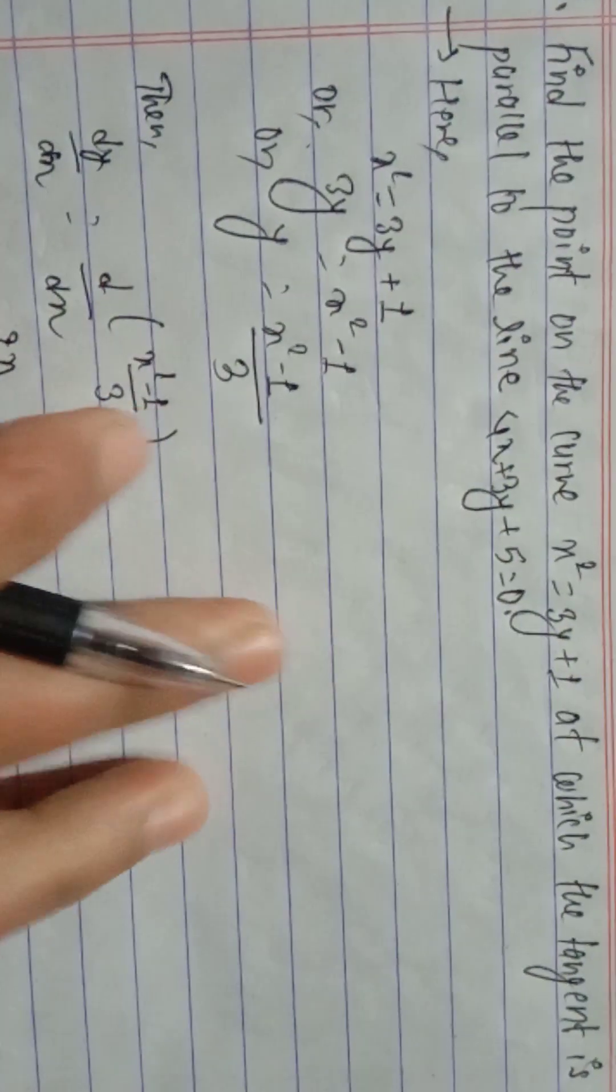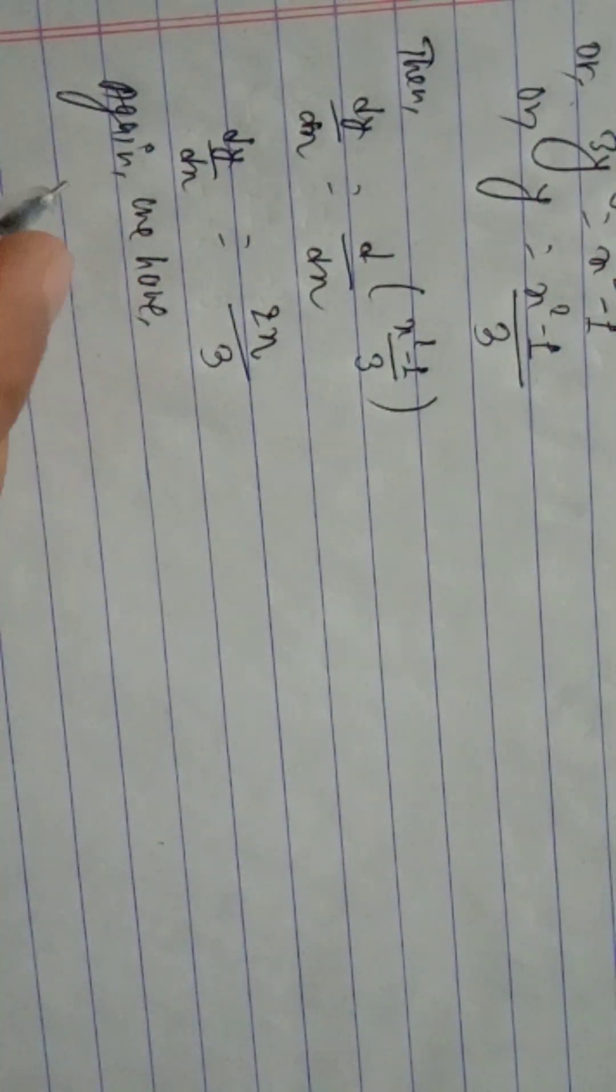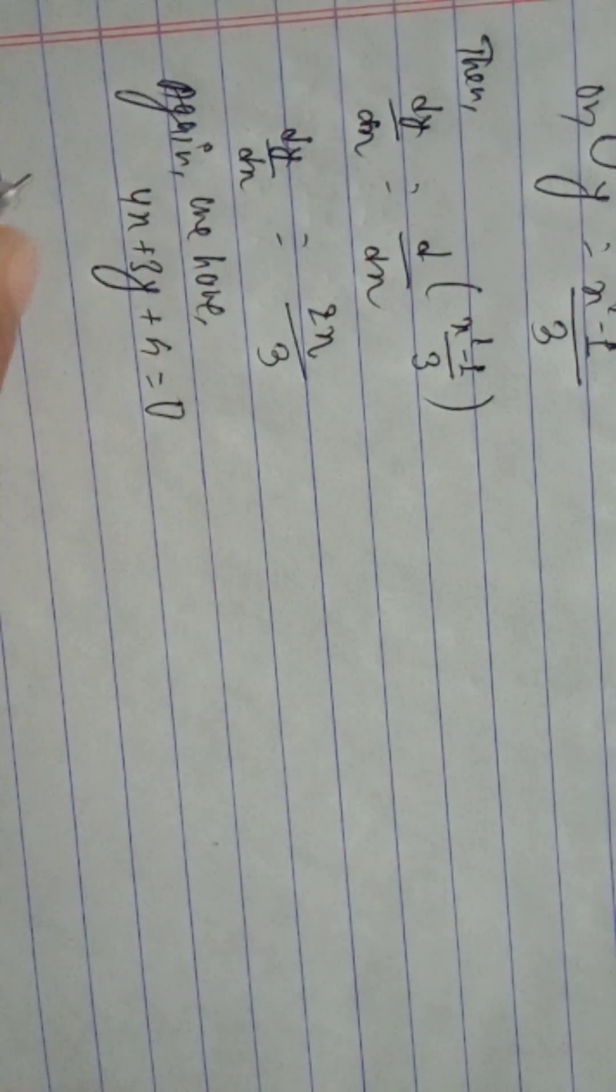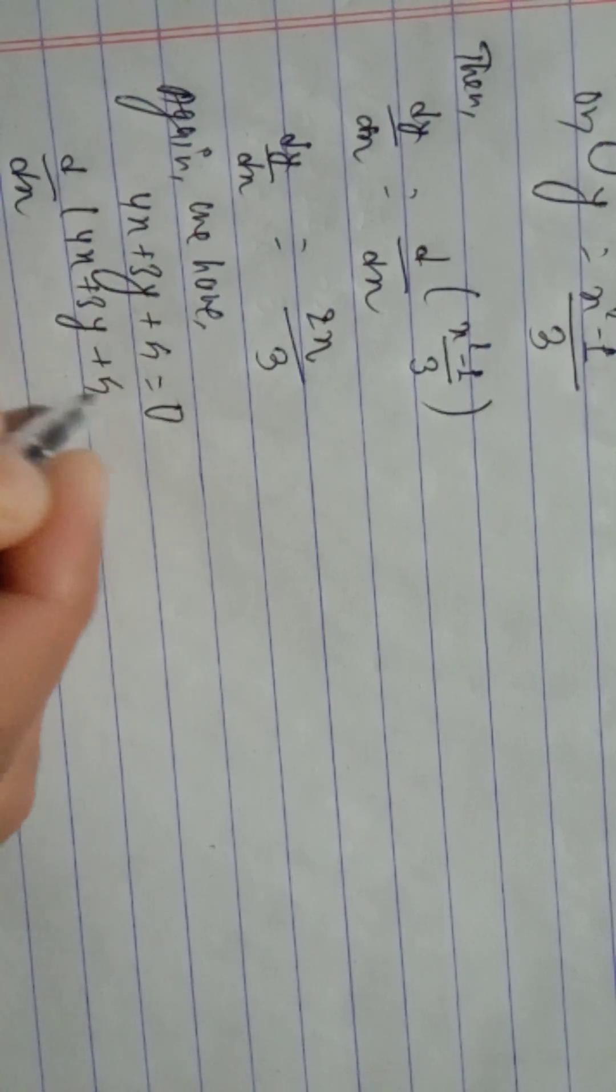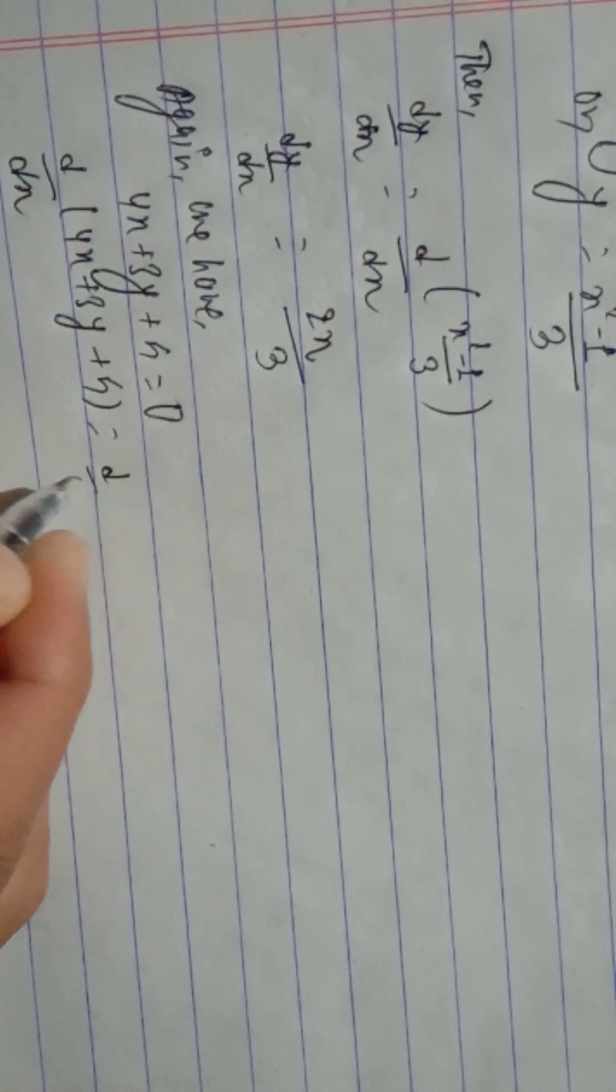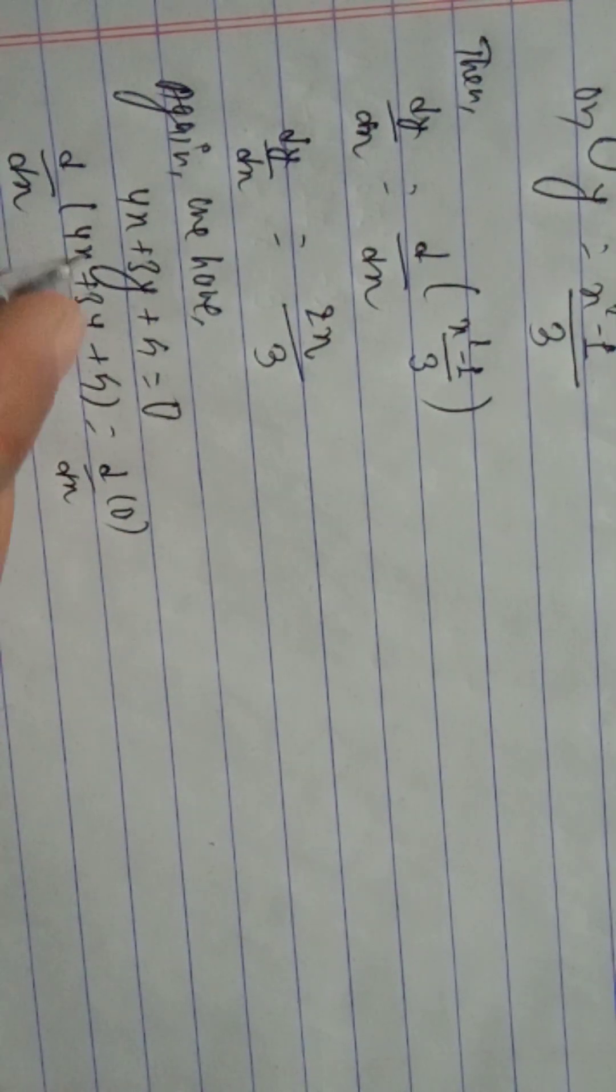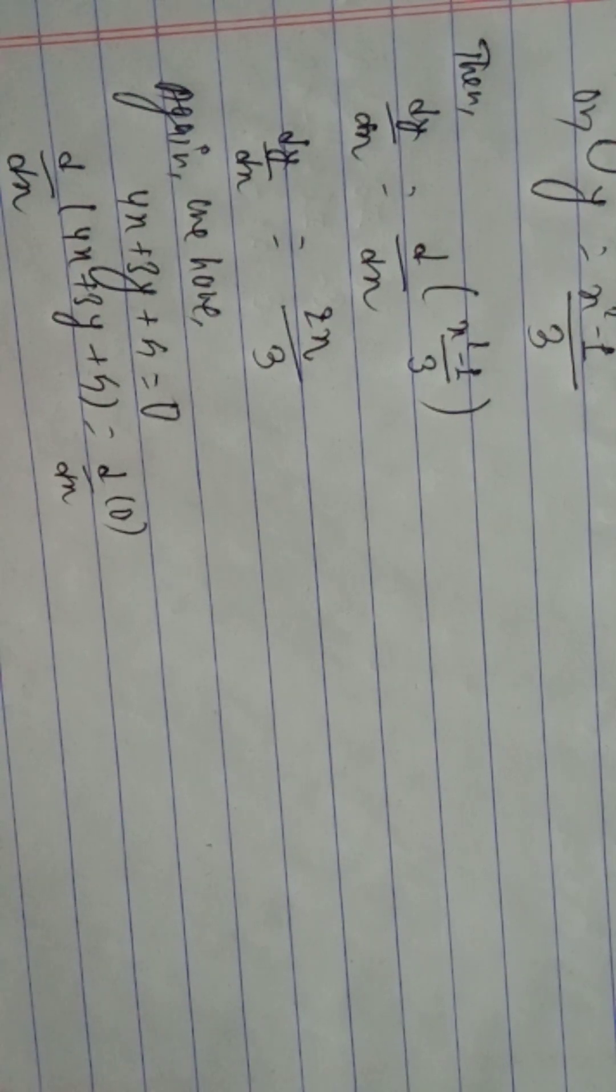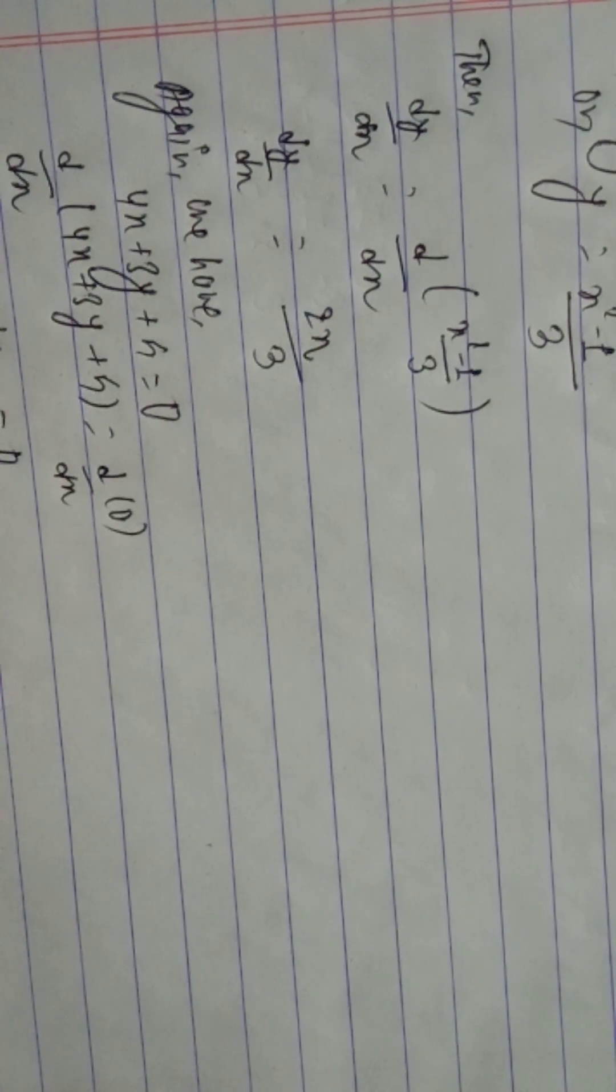Now, we have the given line 4x plus 3y plus 5 equals 0. These two lines are parallel. For 4x plus 3y plus 5 equals 0, differentiate both sides. 4 plus 3 dy by dx equals 0.